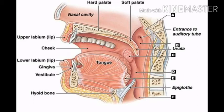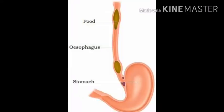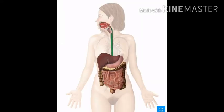Dear students of standard 10, as we are starting the human digestive system, in the previous class we discussed up to the oesophagus. Today we carry on. The masticated food, mixed with some digestive enzyme, passes through the oesophagus and comes to the stomach.